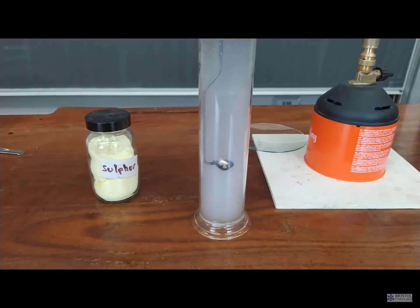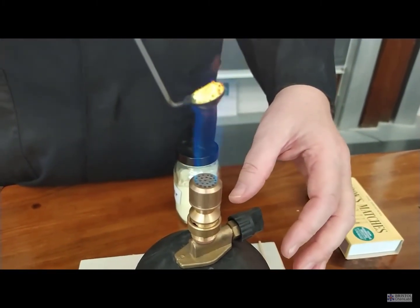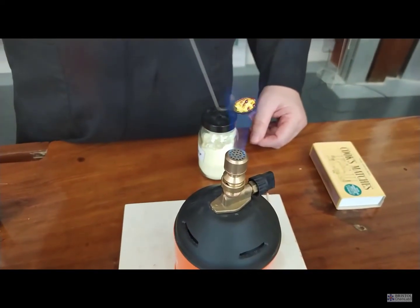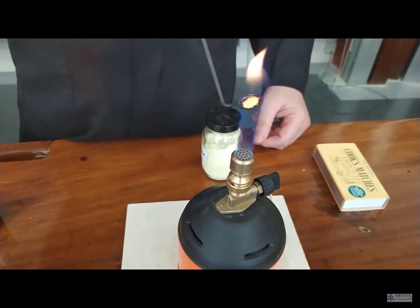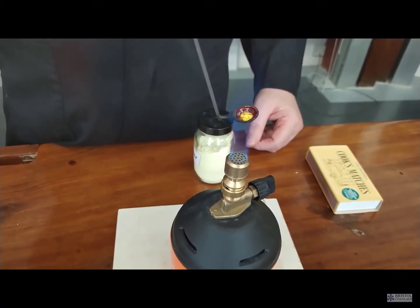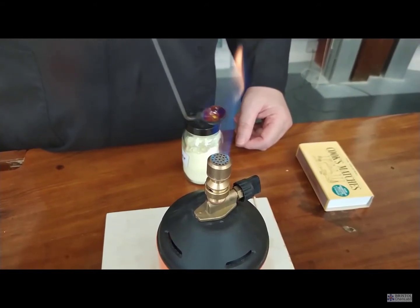Secondly, you don't want the spoon or the magnesium ribbon when it's alight coming into contact with the side of the gas jar because, as you'll see in this demonstration where we use too small a gas jar, it cracked because of the heat produced on combustion. The black coloration that you may see is a reaction between the hot magnesium and the silica in the glass.